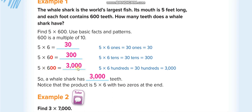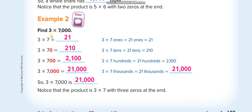So what we do is just remove the zeros, multiply 5 times 6 to get 30, and put the two zeros back — so it becomes 3,000. Example two: 3 times 7 is 21. With one zero the answer is 210, two zeros gives 2,100, three zeros gives 21,000. Just remove the zeros, multiply 3 times 7 to get 21, and put the three zeros back with the answer.